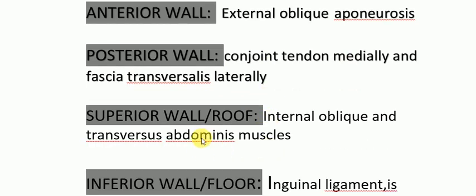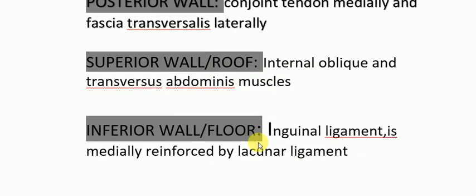The roof is formed by the internal oblique and transversus abdominis muscles. The inferior wall or floor is formed by the inguinal ligament, which is medially reinforced by the lacunar ligament. The lacunar ligament is actually the medial extension of the inguinal ligament.